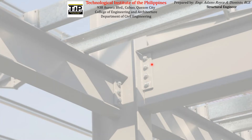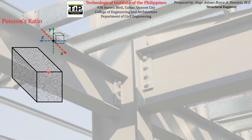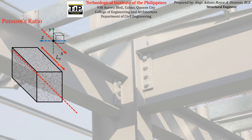We now move on to our next topic which is Poisson's ratio. To demonstrate what Poisson's ratio means, let's have a three-dimensional figure. I have here a member or any material where the dimension along this direction — let's call it L sub x — is directed along the x-axis. We'll call this the longitudinal axis of the material.